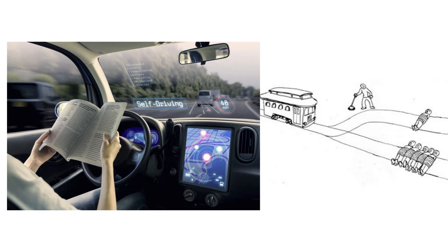This brings us to the trolley problem. Has anybody heard of it before? So the trolley problem: there is a trolley on its way to run over five people. If nobody does anything, it will continue straight and run over those five. However, you are at a lever, and you have the ability to pull the lever, which will redirect the trolley so it only runs over one person. What do you do?